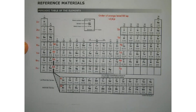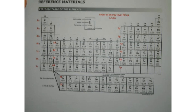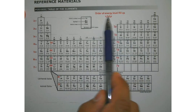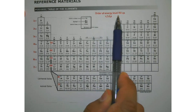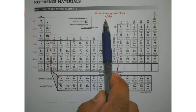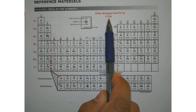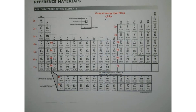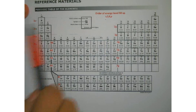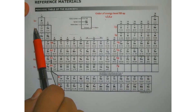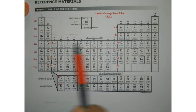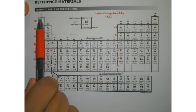Now I'm going to teach you how to do this using the periodic table, without all the drawing. The order of energy level fill-up is: we fill up S first, then F, then D, then P. Looking at the periodic table — and this is important, this will be a test question — we read the periodic table from left to right and then down, just like you would read a book.